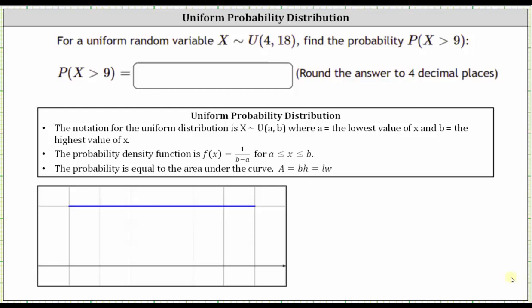In this video, we will determine a probability involving a uniform continuous random variable by hand, and also check the result on desmos.com.